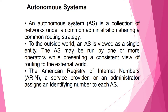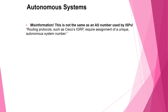An autonomous system (AS) is a collection of networks under a common administration sharing a common routing strategy. To the outside world, an AS is viewed as a single entity. The AS may be run by one or more operators while presenting a consistent view of routing to the external world. ARIN, a service provider, or an investor assigns an identifying number to each autonomous system. Note: this AS number is not the same as the AS number used by ISP routing protocols such as IGRP.